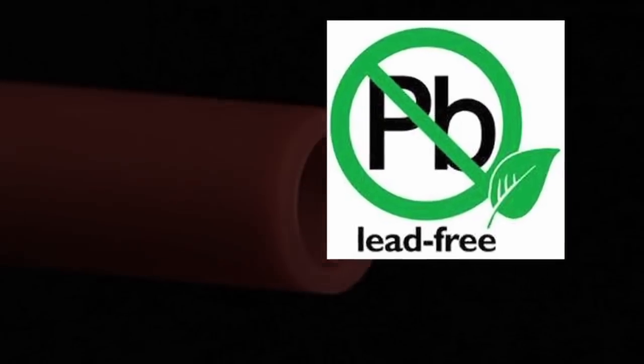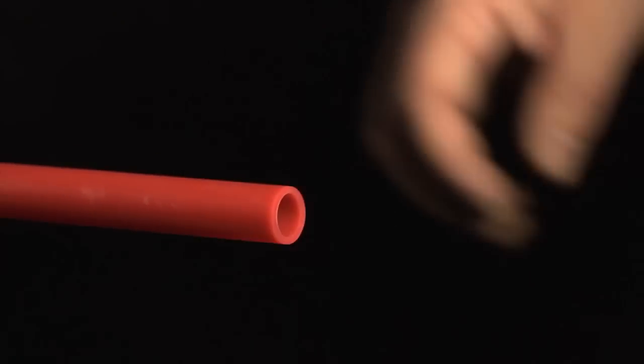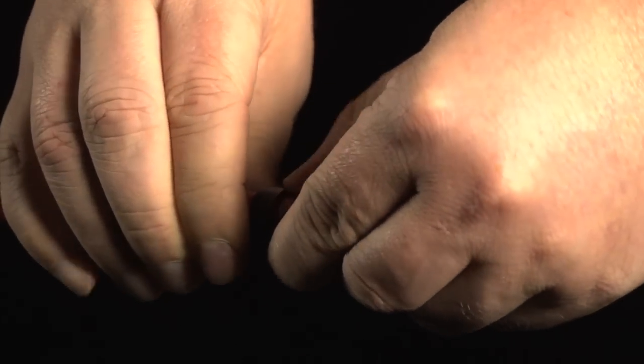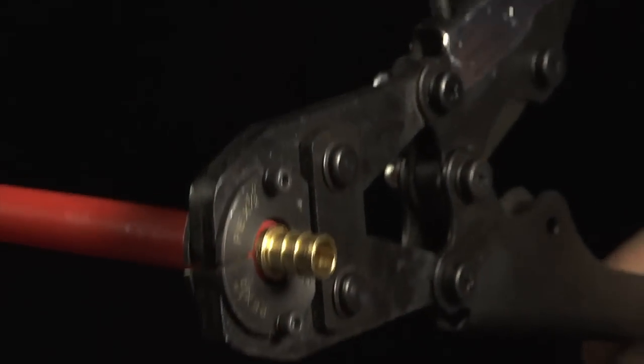Barb PEX fittings are attached to PEX with a crimp ring or pinch clamp. Slide the ring or clamp over the end of the tubing. Insert the fitting into the tubing. Move the ring or clamp until it's one-eighth to one-quarter inch from the end of the tubing.